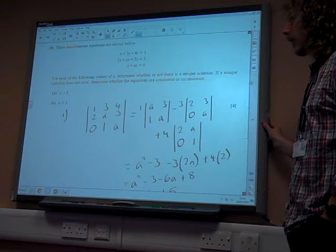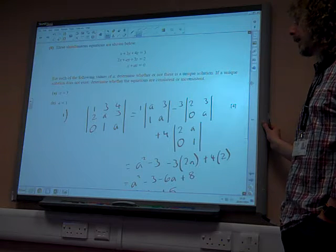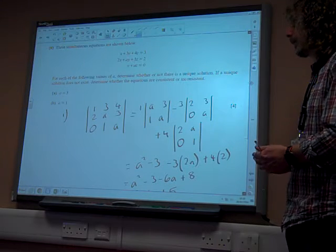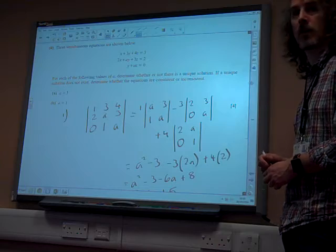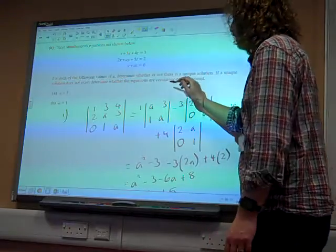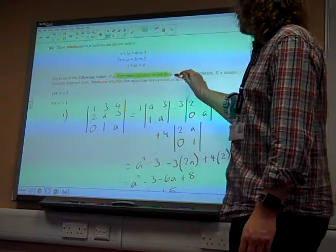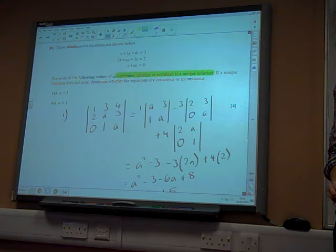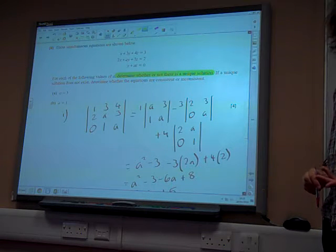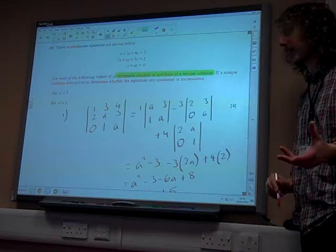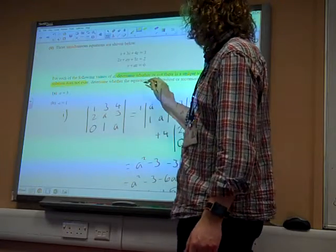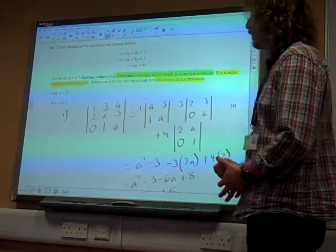3 simultaneous equations are shown below. For each of the following values of A, determine whether or not there is a unique solution. If the unique solution does not exist, determine whether the equations are consistent or inconsistent. Notice what the question is asking you for and what it's not asking you for. Determine whether or not there is a unique solution. OK? Yes or no answer. Is there a unique solution or not? Not find the unique solution, just is it there? And then, if and only if the unique solution does not exist, you then need to say whether it's consistent or inconsistent.